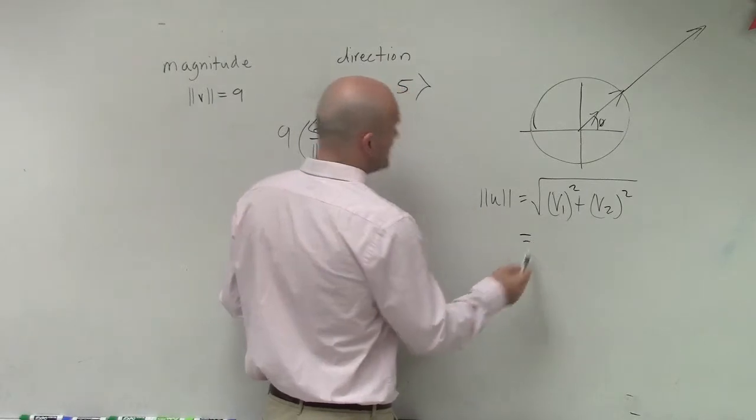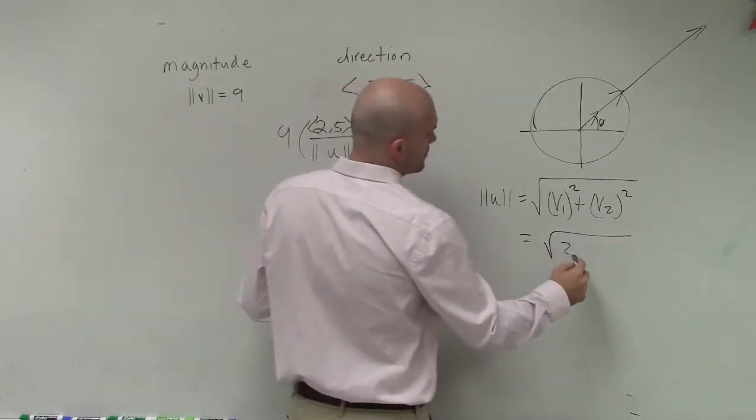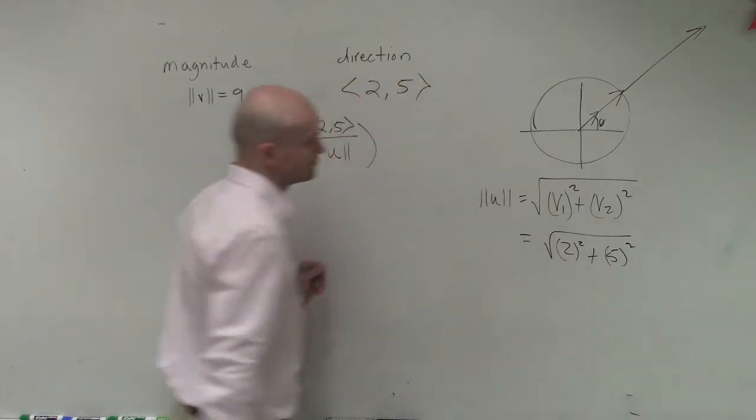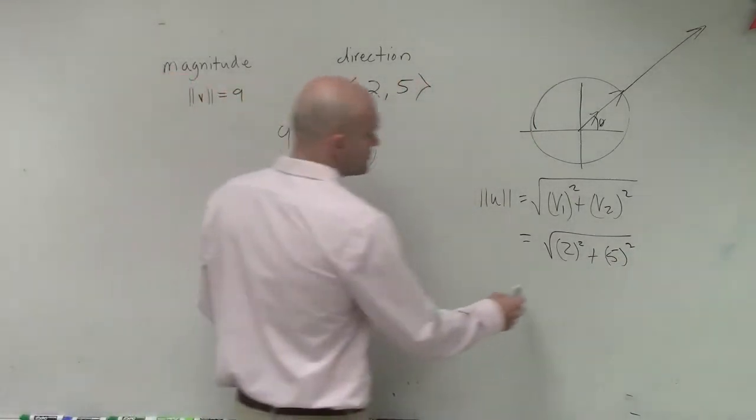So remember the magnitude is equal to the square root of v1 squared plus v2 squared. So therefore, that's going to equal the square root of 2 squared plus 5 squared, which is the square root of 29.